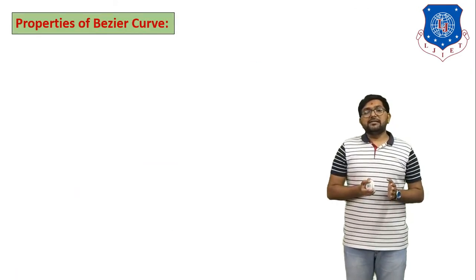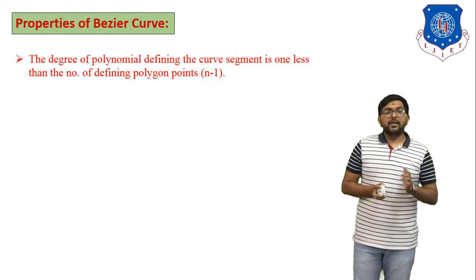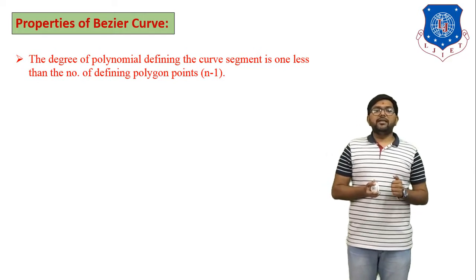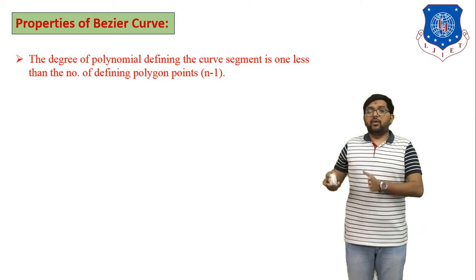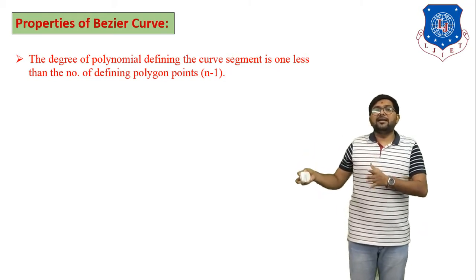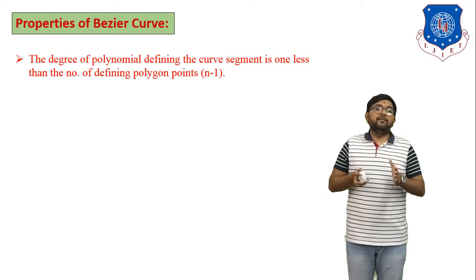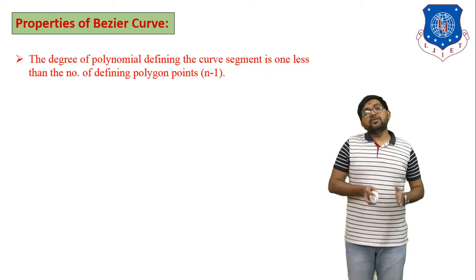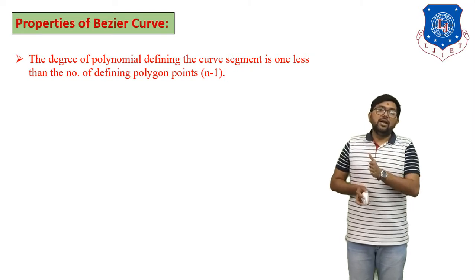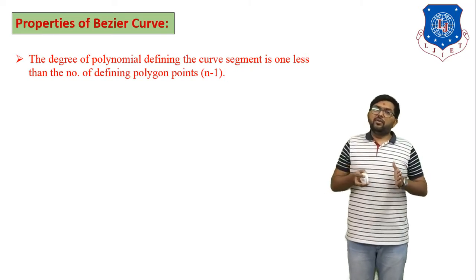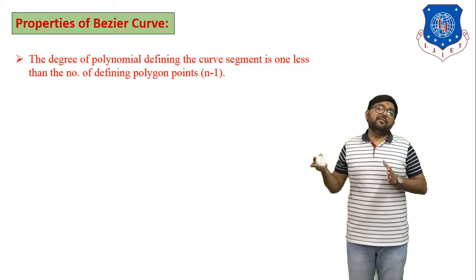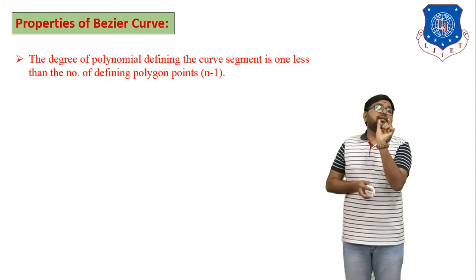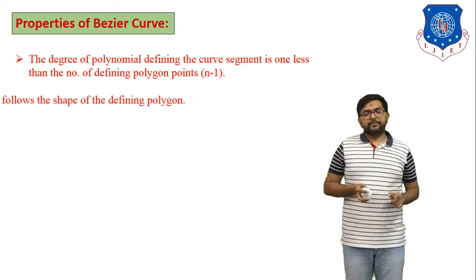Now let's discuss the properties of the Bezier curve. First property: the degree of the polynomial defining the curve segment is 1 less than the number of defining polygon points, i.e., n−1. For example, if we have 6 points (numbered P0 through P5), the polynomial degree is 5.